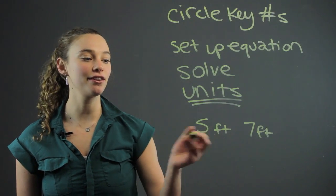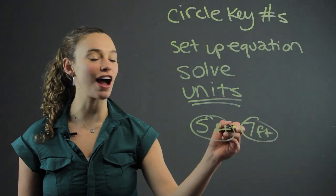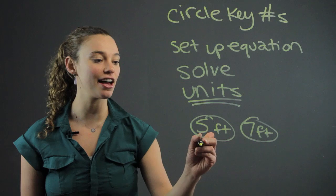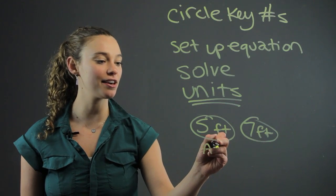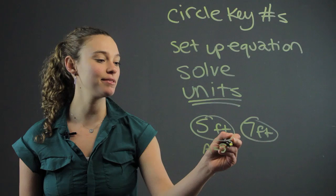So then you're going to have them circle the key numbers, five and seven. Then have them set up an equation. What do they know for area? They know that area A equals the length times the width, so five times seven.